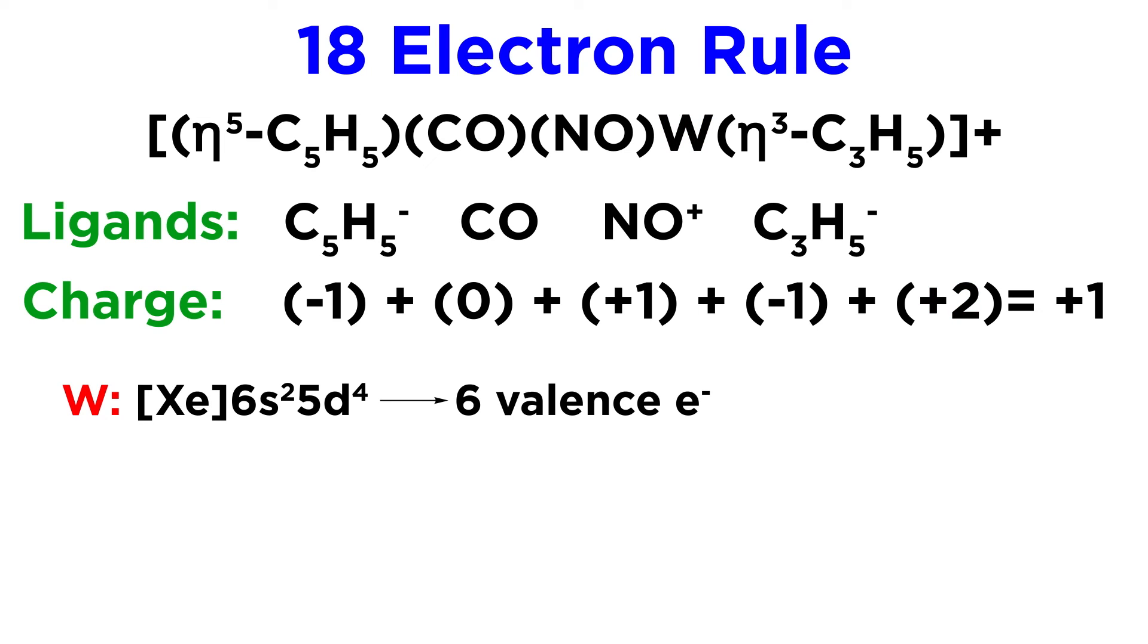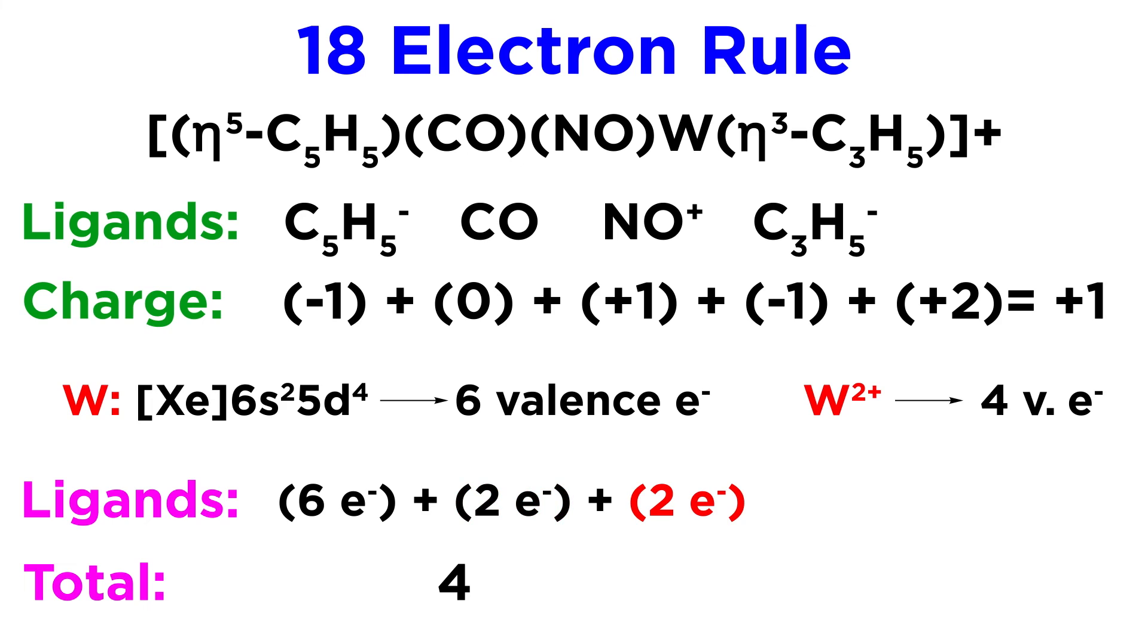Tungsten is 6s2 5d4, so losing two electrons leaves us with just the 4d electrons. Now we add everything up. Four electrons from the metal, six from the CP⁻, two from the carbonyl, two from the nitrosyl, and four from the allylic ligand. That's a total of eighteen, so this is a stable complex.